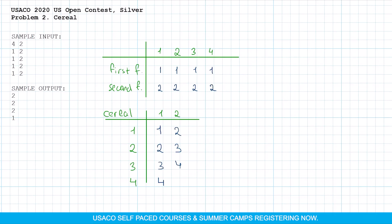So when i equals 1, we have 2 cows. When i equals 2, we also have 2 cows. When i equals 3, 2 cows, and when i equals 4, 1 cow. And this is the answer in the sample input.